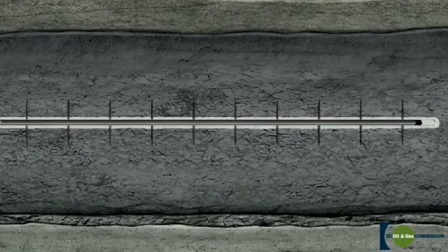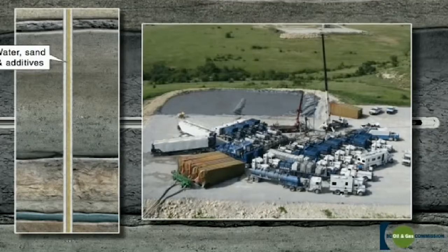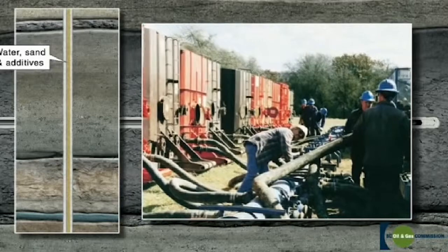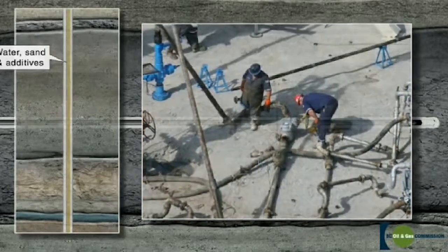Next, because the shale is tight or compressed, the well will have to be fracked. Known as hydraulic fracturing, this is a process where water, sand, and additives are pumped into the wellbore and down the casing under extremely high pressure.